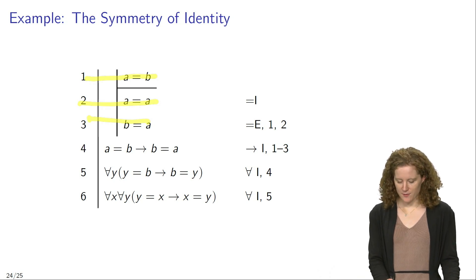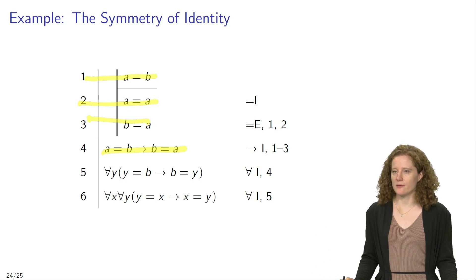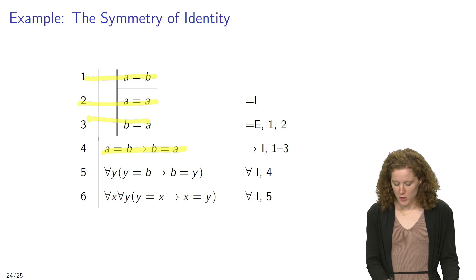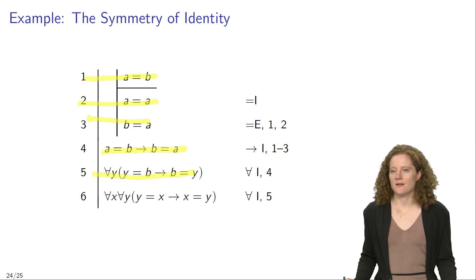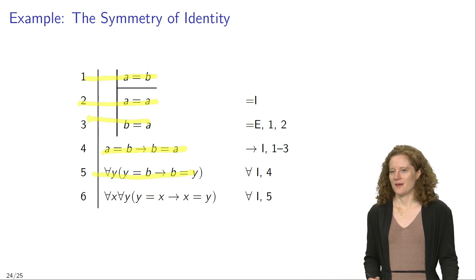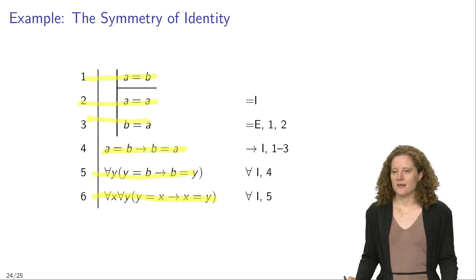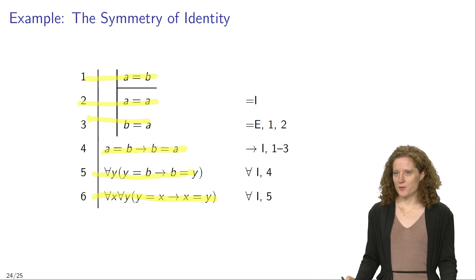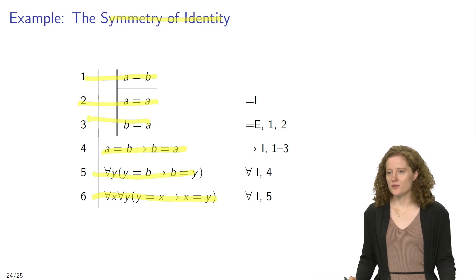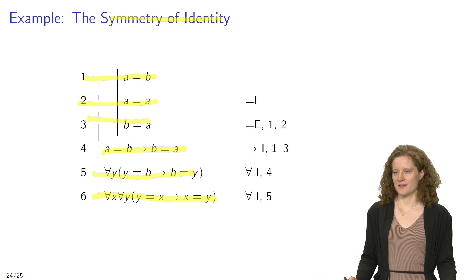In line four we can infer that if A equals B then B equals A, justified by conditional introduction applied to lines one to three. We can then infer that for all Y, if Y equals B then B equals Y, by universal introduction applied to line four. And in the final step we infer that for all X and for all Y, if Y equals X then X equals Y. What we have proven here is the so-called symmetry of identity — meaning that for any two objects, if Y is identical to X then it must be the case that X is also identical to Y.